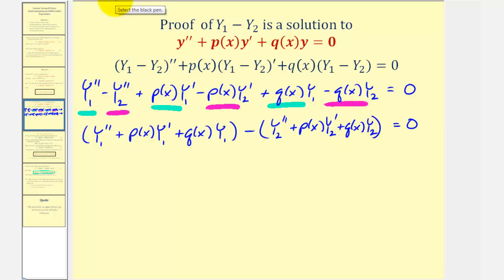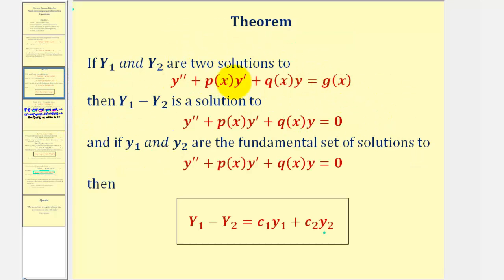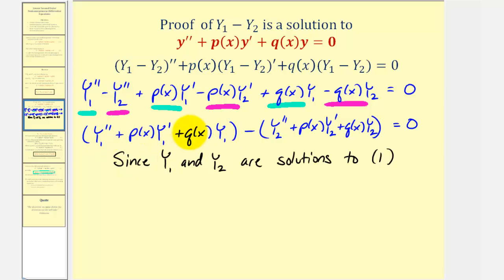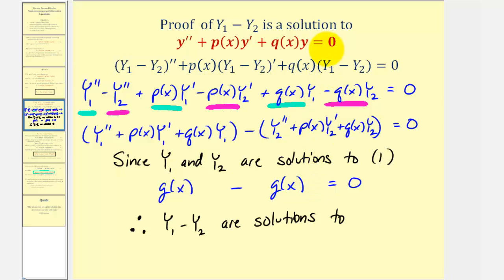Since big Y sub one and big Y sub two are both solutions to equation one, the non-homogeneous differential equation, both expressions must be equal to g of x. Because Y sub one is a solution, this first quantity equals g of x, and this second quantity also equals g of x — so the result is g of x minus g of x, which equals zero. Therefore, big Y sub one minus big Y sub two is a solution to the corresponding homogeneous differential equation.